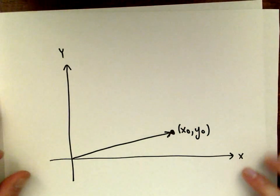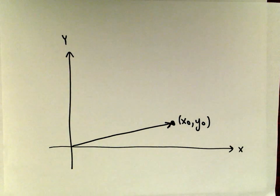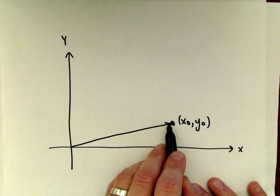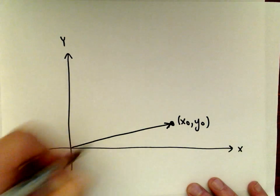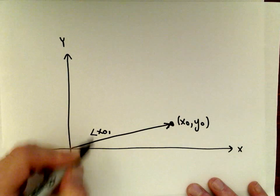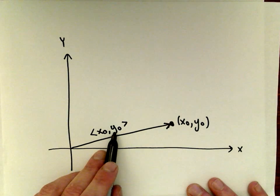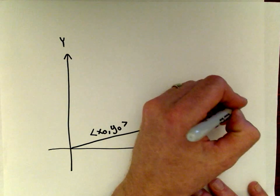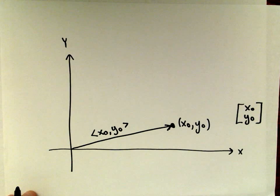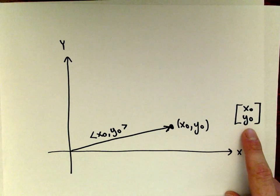So here we go — x axis, y axis. Suppose we've got this point here with coordinates x₀, y₀. I'm going to think about rotating this vector. We can write this vector with vector notation using the little pointy brackets, so this is the vector with components x₀ and y₀. You can also write vectors as columns — x₀ over y₀ — that's another way to represent the same vector. I'll kind of switch back and forth between these notations.